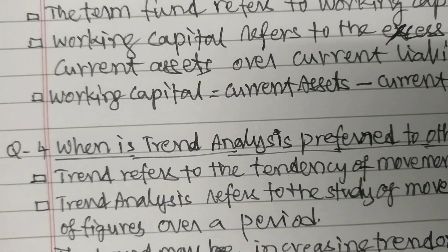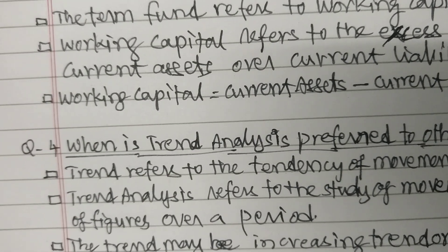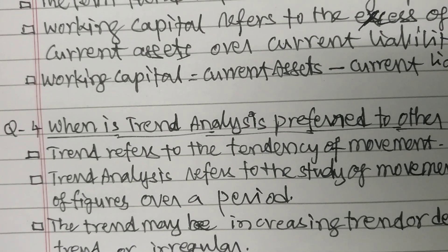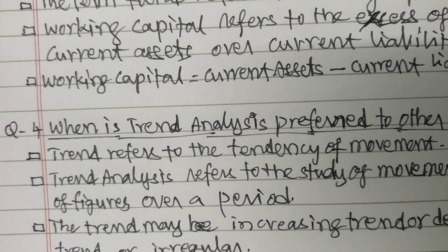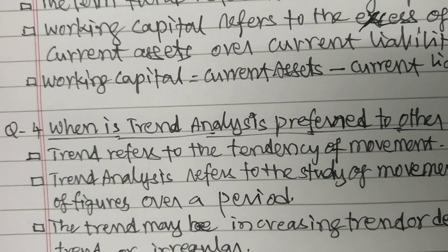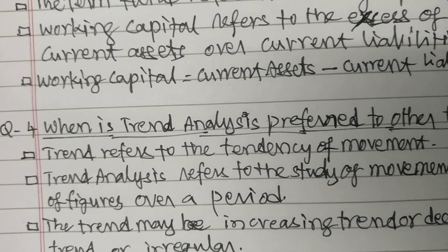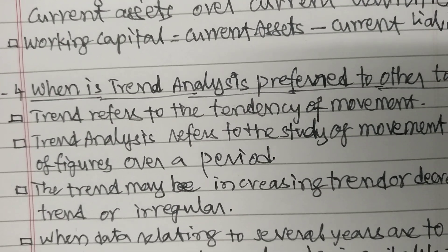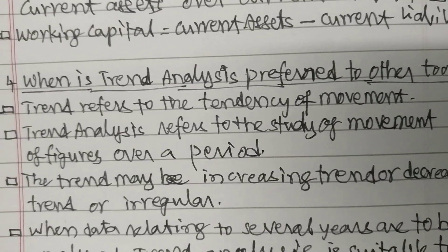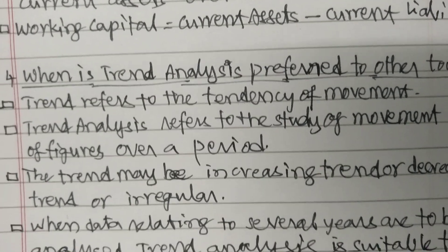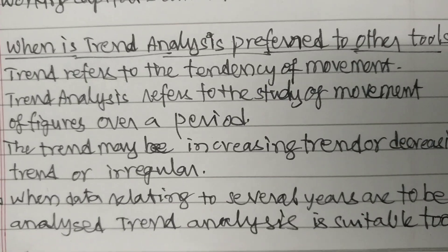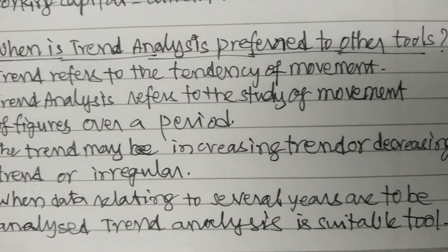Question 4: When is trend analysis preferred to other tools? Trend refers to the tendency of movement. Trend analysis refers to the study of movement of figures over a period. The trend may be an increasing trend, decreasing trend, or irregular. When the data relating to several years are to be analyzed, trend analysis is a suitable tool.